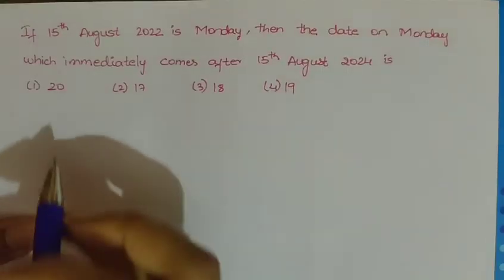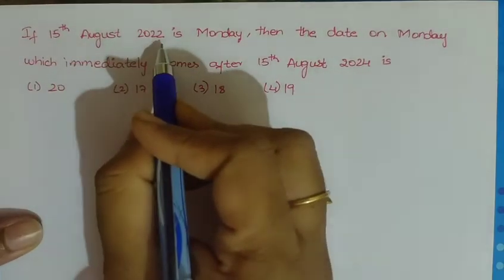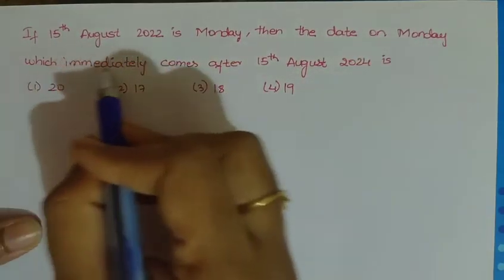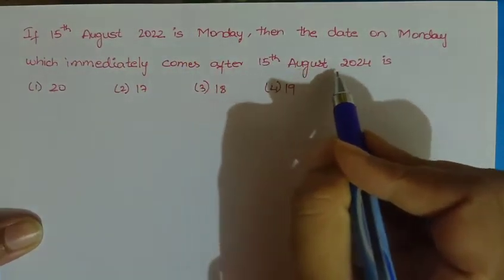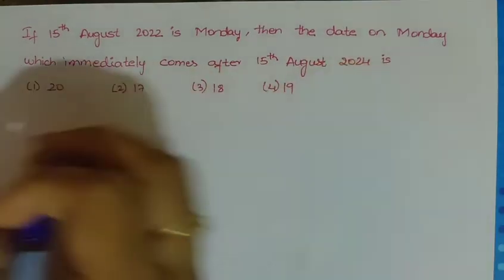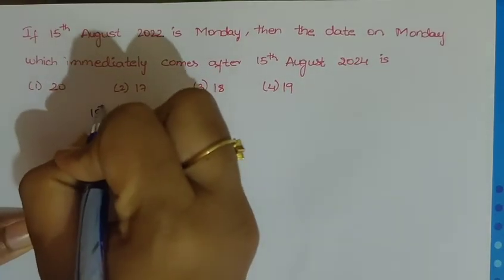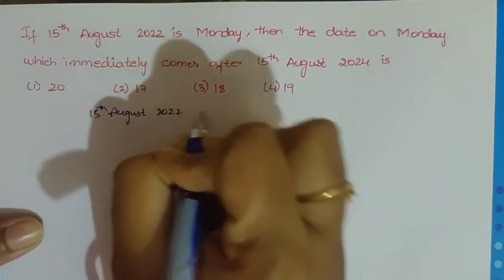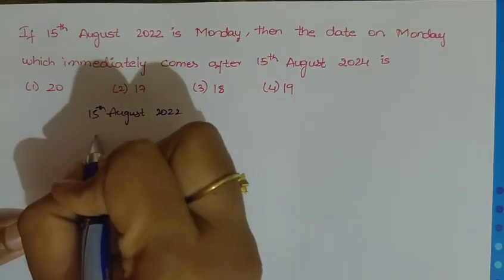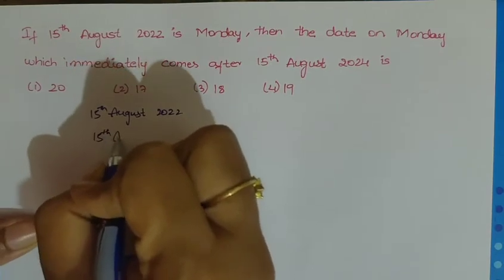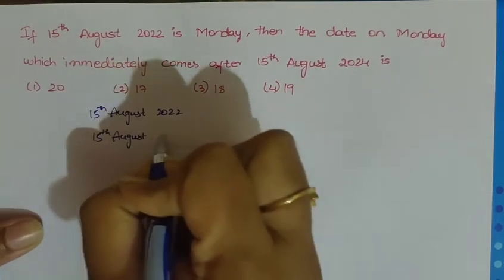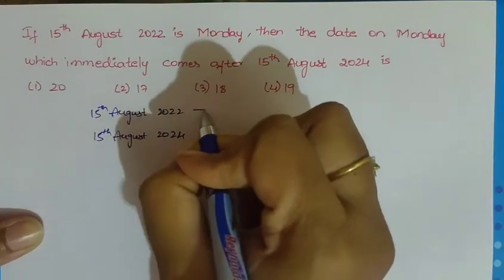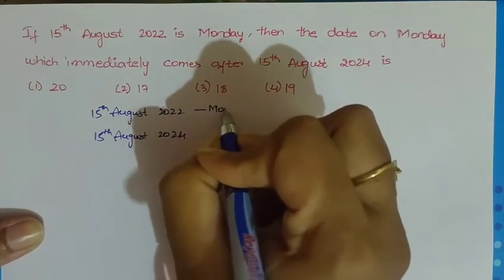Next problem: if 15th August 2022 is Monday, then what is the date of the Monday which immediately comes after 15th August 2024? We need to consider from 15th August 2022 to 15th August 2024.